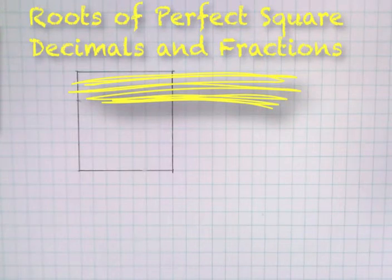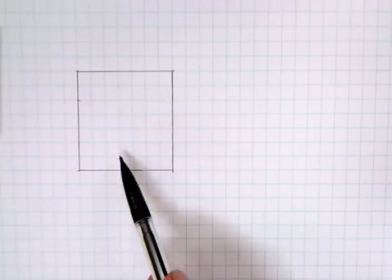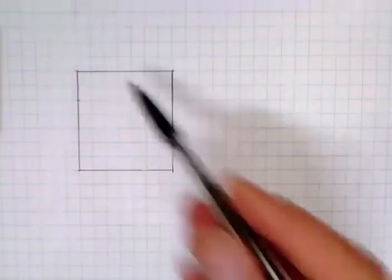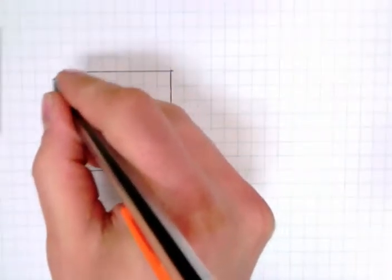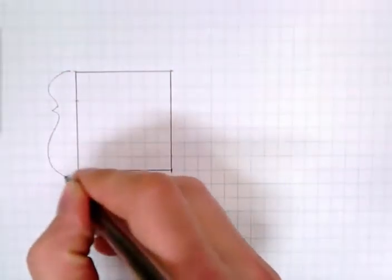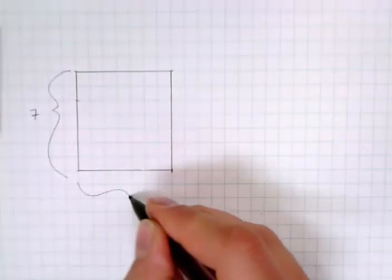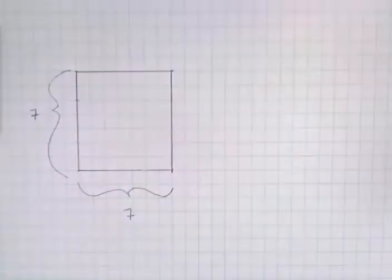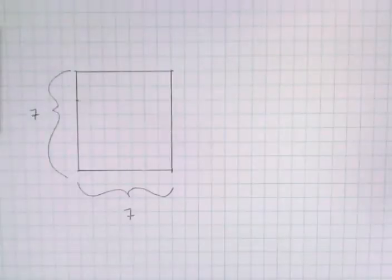So we're starting off here with a square, because we're talking about squares. I have a 7 by 7 square. We know the area of this square is 49 — the whole distance here is 7, and the whole distance here is 7. So we have a 7 by 7 square, which gives me an area inside of 49.